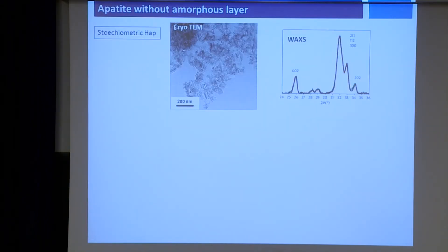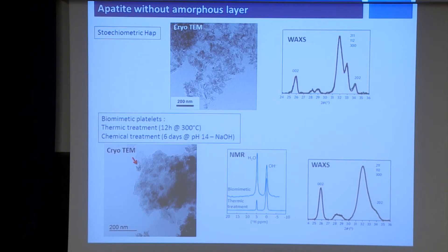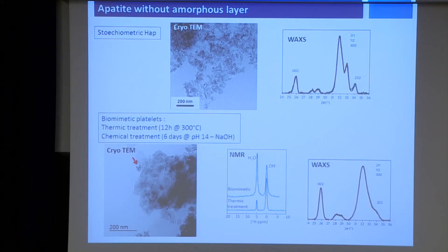To prove that, we had to check some particles without any hydrated layer. We looked at stoichiometric apatite — nothing special in cryo-TEM, nothing special in WAXS — but it's not platelets. So we had to keep the same morphology and try to get samples without any hydrated layer but with platelets of the same size. That's quite tricky. We tried several post-synthetic treatments to remove or modify the surface and change the properties — thermic treatment, chemical treatment. We found some good conditions, and in these conditions we see a strong reduction of the adsorption capability of the particles. Once treated, we don't see specific oriented arrangements, and in WAXS again, no specific orientation.